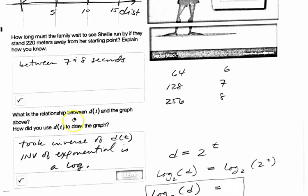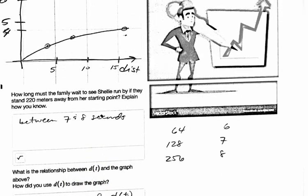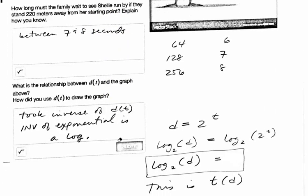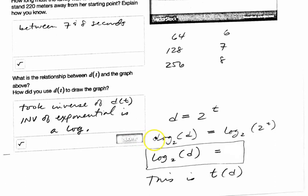And so what's the relationship d to t in the graph above, d of t? In the graph above, the d of t would be the exponent going this way, right, 2 to the t. And t as a function of d, which is what we've just calculated, is the inverse of it.